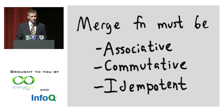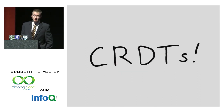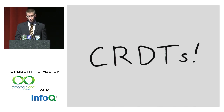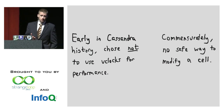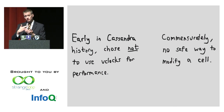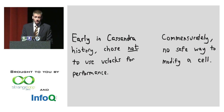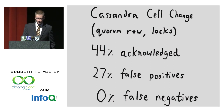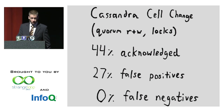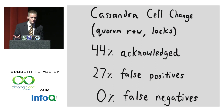Cassandra chose early not to use vector clocks for performance reasons — it didn't want to do a read before every write, so it can go twice as fast in network round trips. But as a side effect, there's no safe way to modify a cell in Cassandra. Some people say you can with an external lock service — just like with Riak, they're wrong. If you write using quorum R+W and an external lock service so writes never interleave, you might see 44% of writes acknowledged, but out of those roughly a third would just be thrown away.